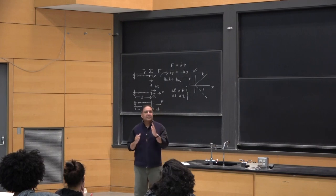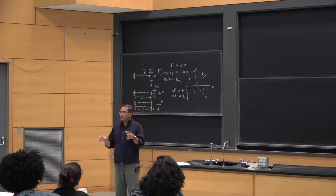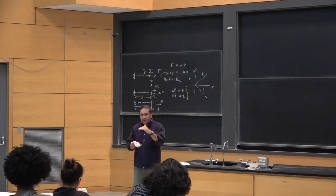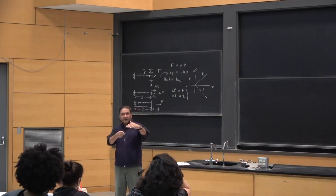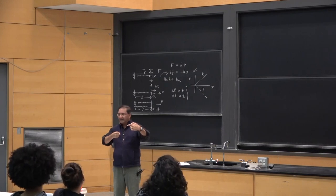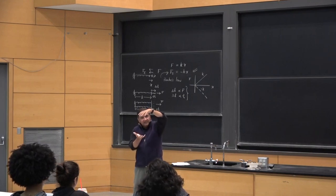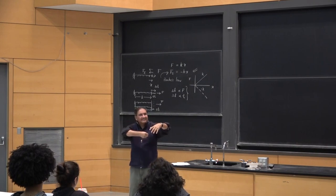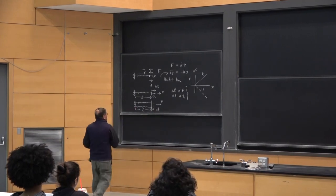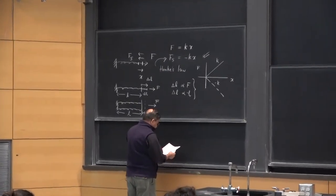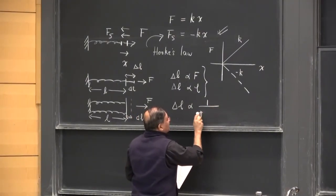Instead of two springs, take 50 springs. You apply the same force. Wouldn't it be harder to pull if there were 50 springs instead of one? So in other words, if I make the thing thicker with many, many springs, then it will be harder to pull. Therefore, delta L should be less than for a single spring, which would be easier to pull. Delta L is actually inversely proportional to the number of springs.